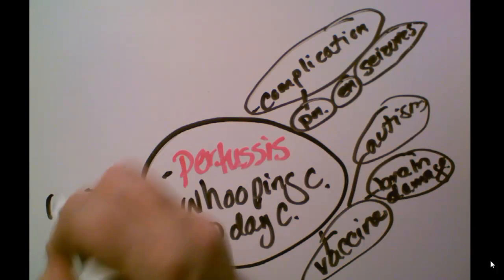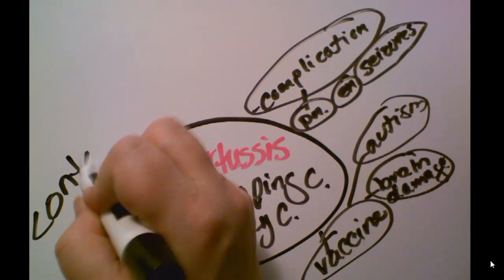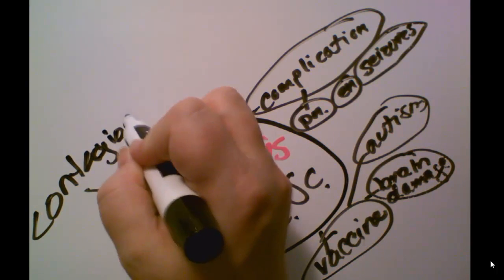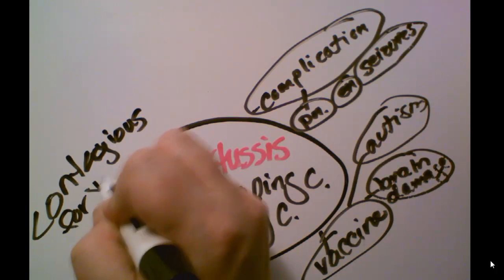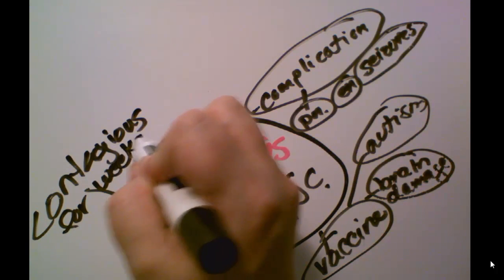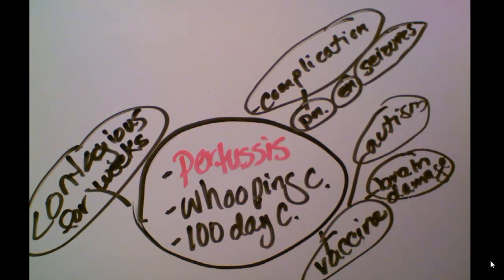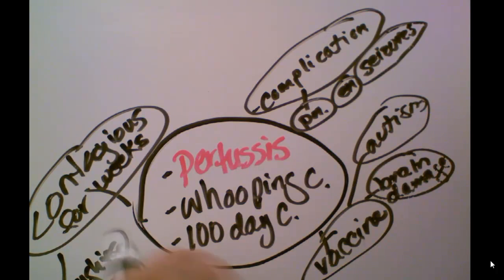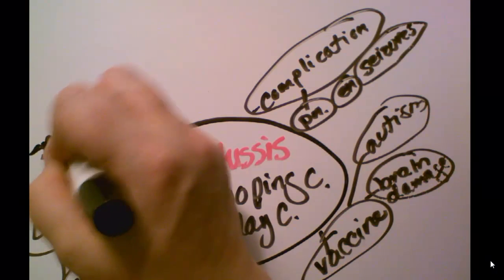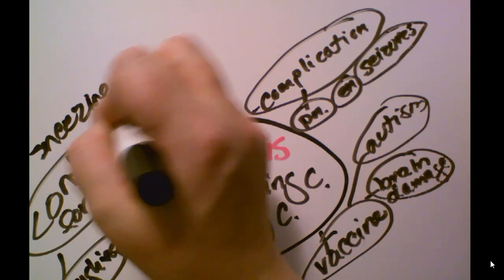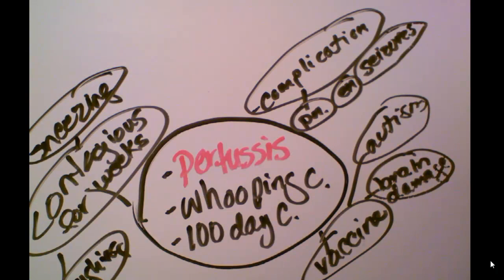I want to talk about the fact that it's contagious — and contagious for weeks. That's why this one is so dangerous in many ways. It can be spread by coughing, by sneezing, or just coming into contact with the germs — if your little brother has it, if somebody else in your family has it, or you're on a college campus and somebody has it.